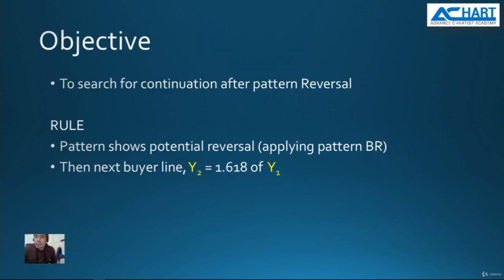Our objective for this continuation pattern is to see whether the trend will continue upwards or not. If we can see the trend would continue to go up, we can let the profit run. The rule for this to happen is that the pattern must show a potential reversal — that is, a bottom reversal pattern must have occurred. Then we measure the new target for the next loop, for the demand line, which is y2 equal to 1.618 times y1.